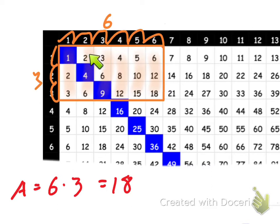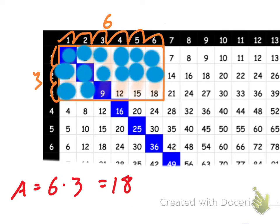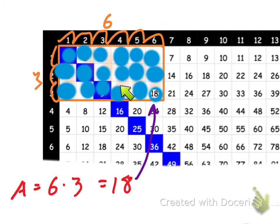If we count up all of these one-by-one squares, we have eighteen of them. They're just eighteen little squares that make up the area of this rectangle. That's all area is — it's just a two-dimensional space. One dimension is three, and the other dimension is six, and three times six is eighteen. We say this is square units because they're little squares.